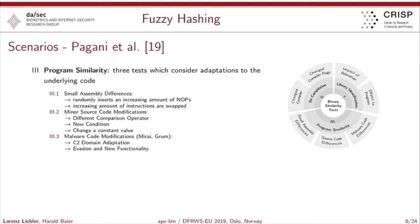The third and most interesting scenario is the task of program similarity, with three subtasks. First, small assembly differences — you insert an increasingly large number of NOPs or swap specific instructions inside the binary. Second, minor source code modifications, where different comparison operators are introduced, new conditions implemented, or constant values changed. Third, malware code modification tasks using Mirai for Linux and Gram for Windows, where they adapted command-and-control domain information and introduced evasion features like anti-VM and anti-debugging capabilities, and new functionality such as user information extraction.